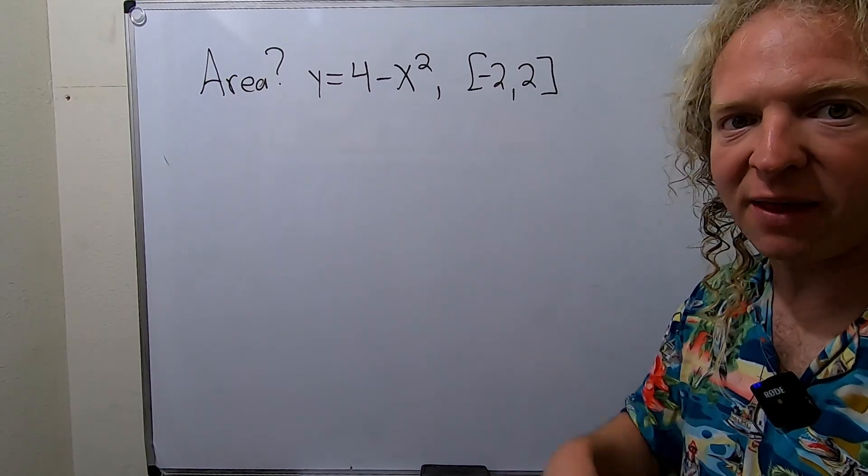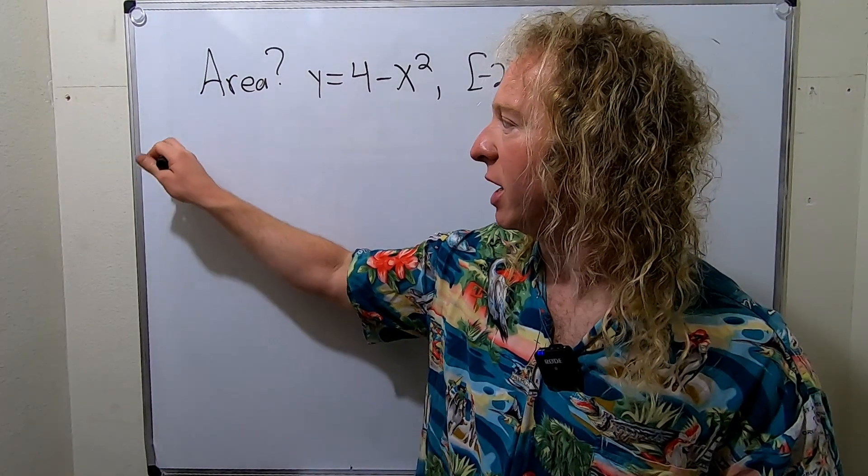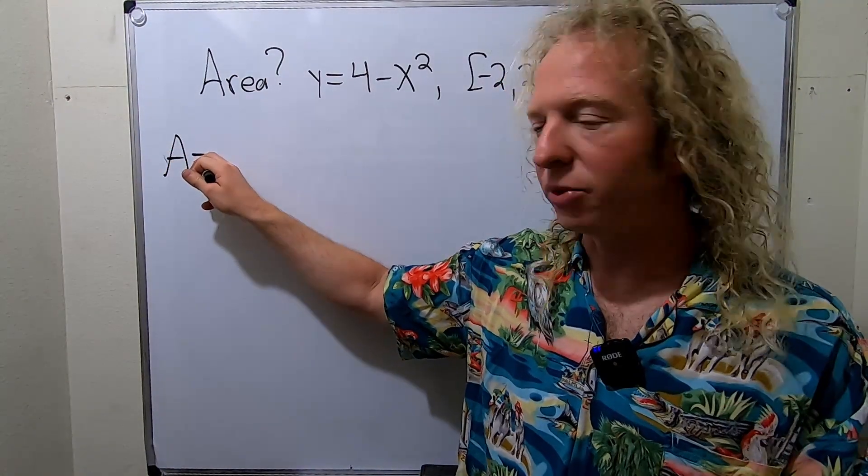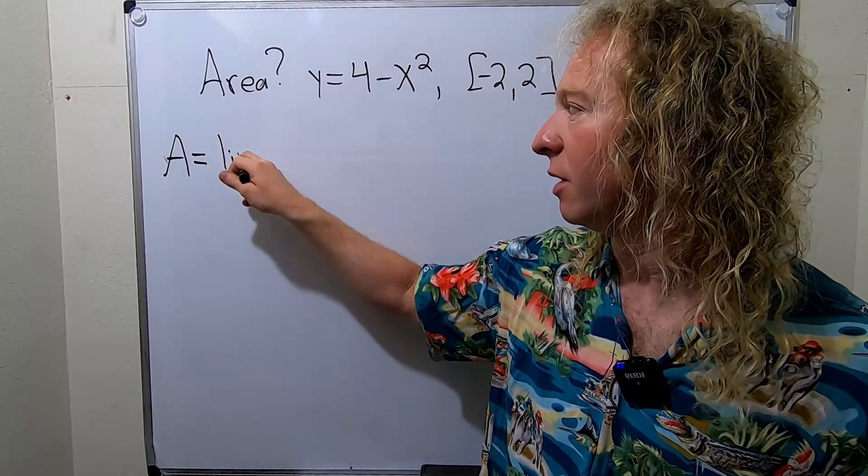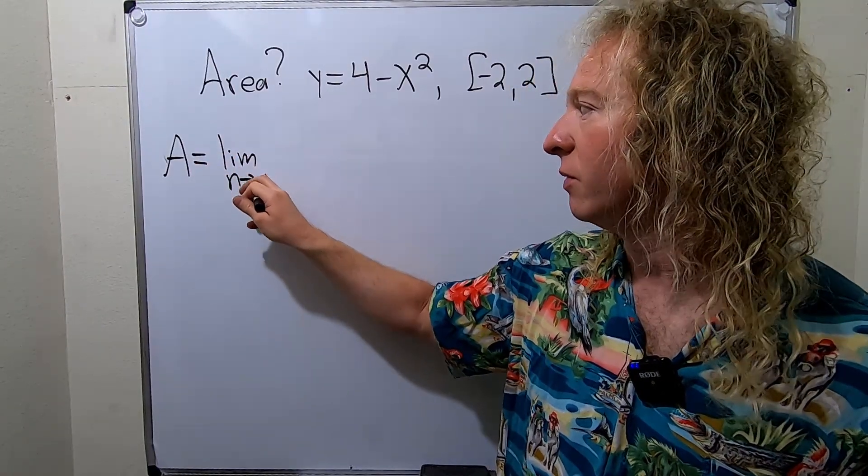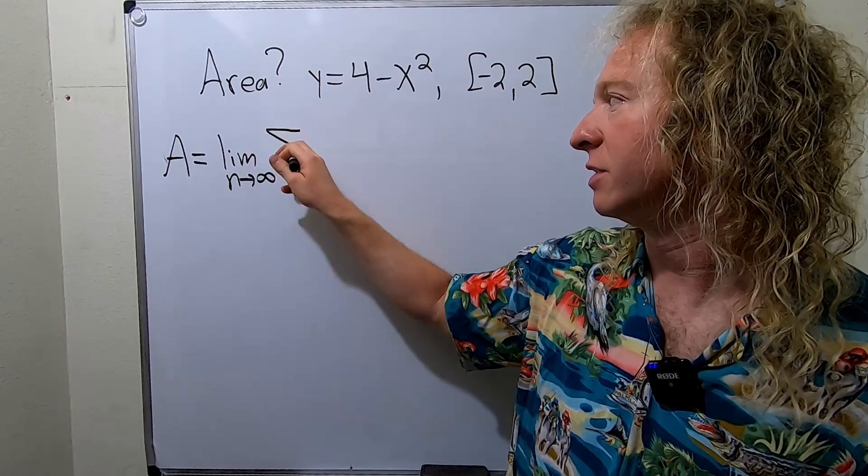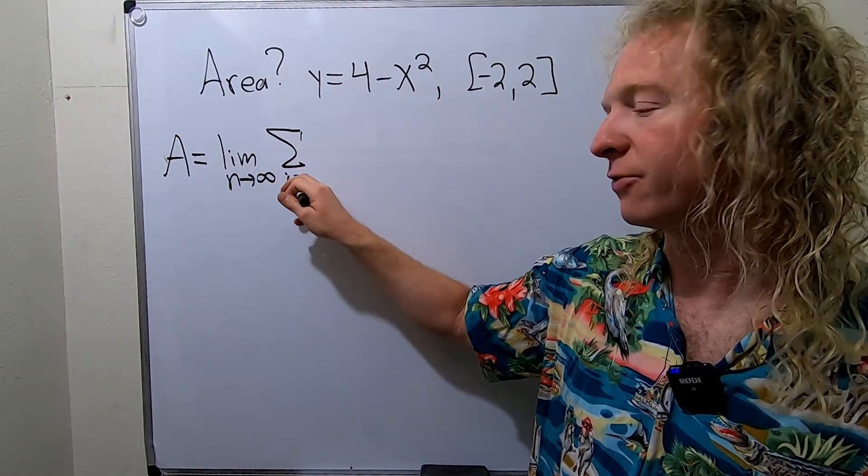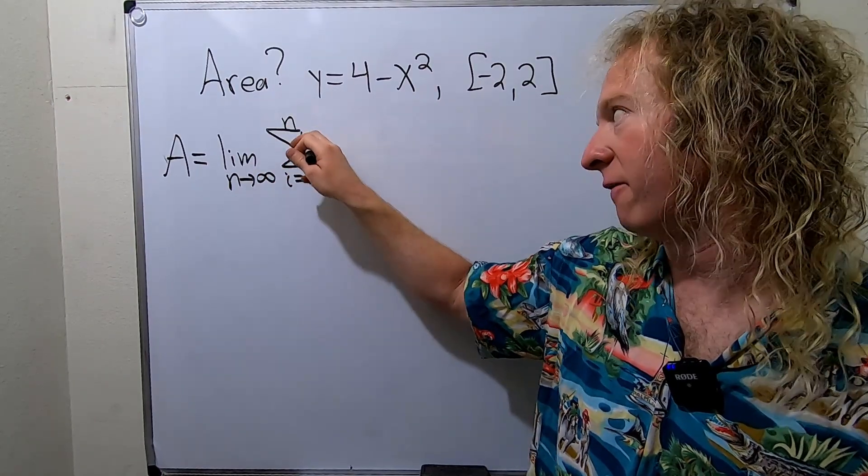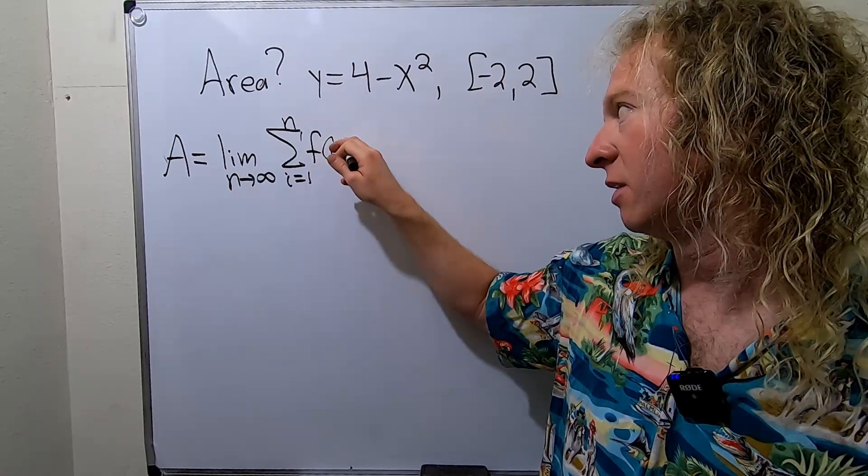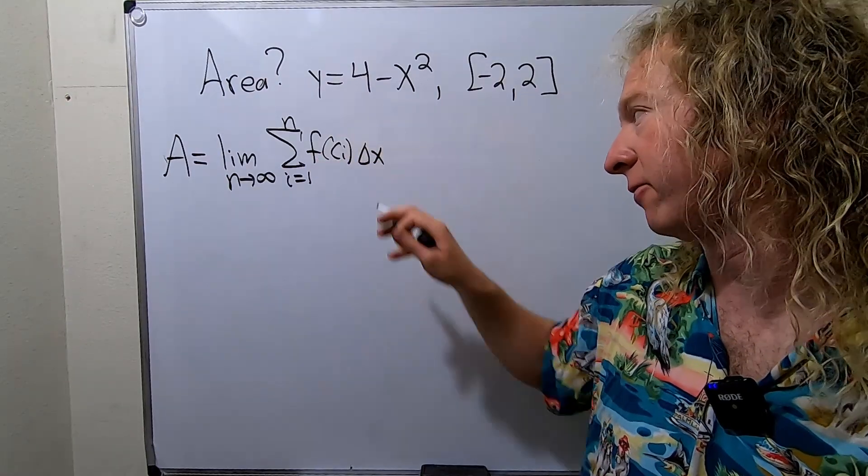So let me give you the formula for area and then we'll slowly go through it. So the area is equal to the limit as n goes to infinity of the sum as i runs from 1 to n of f of c sub i times delta x. So this is the formula for area.